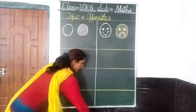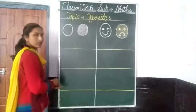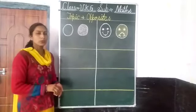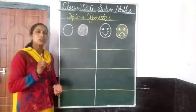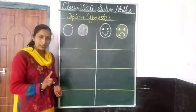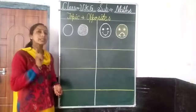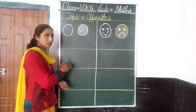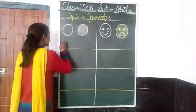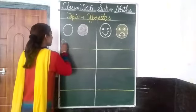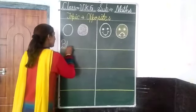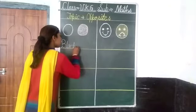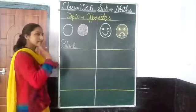So we start now — write. Do you know the spelling of black? Mein aapko sikhaungi. B-L-A-C-K, black. Black means kala.